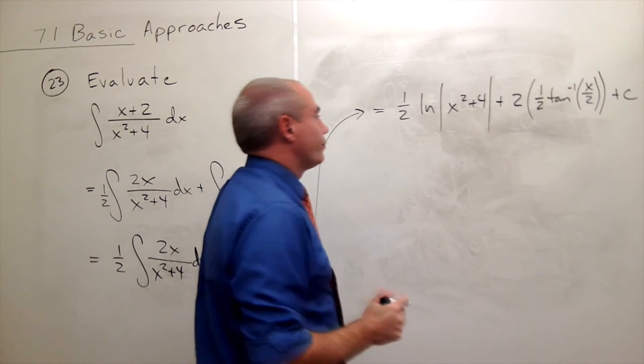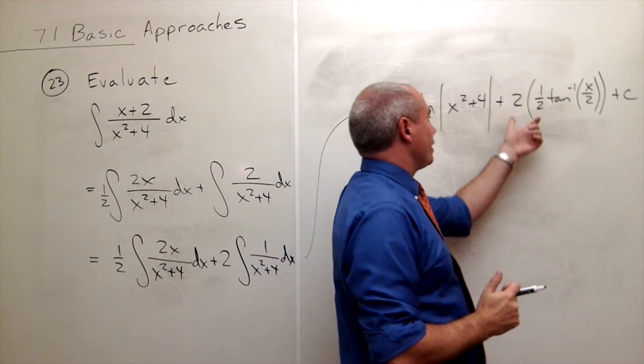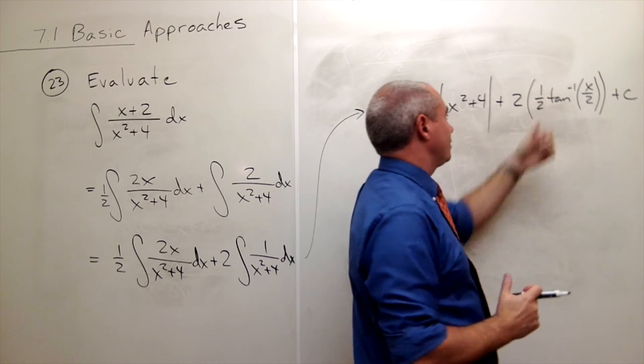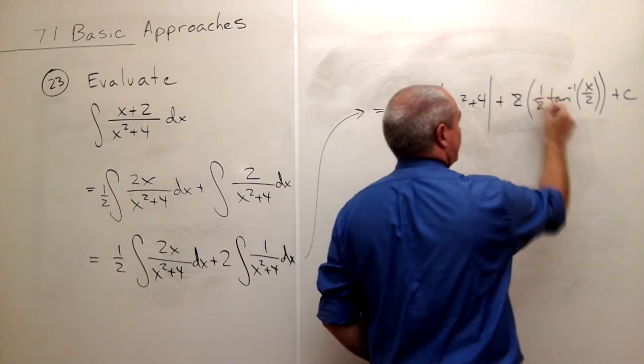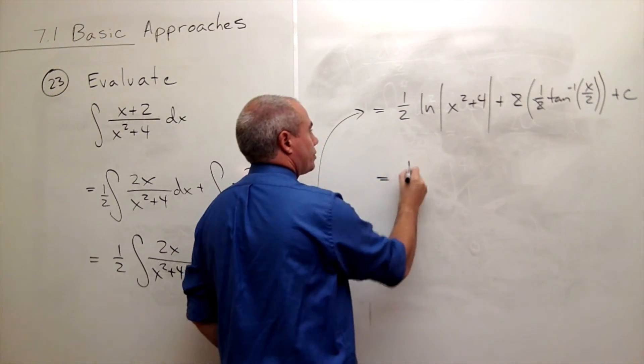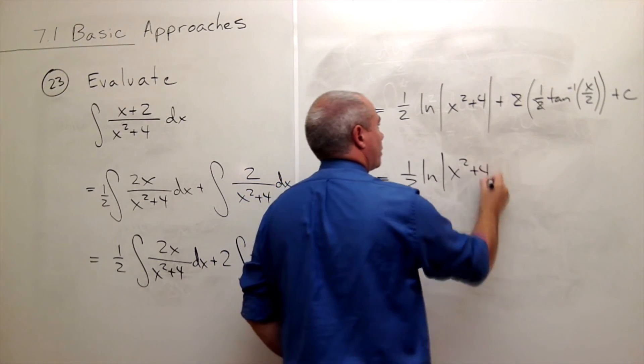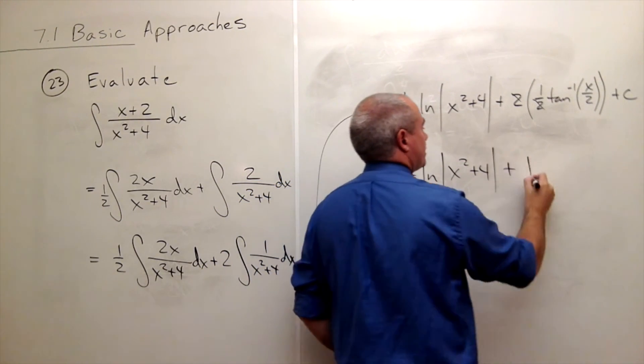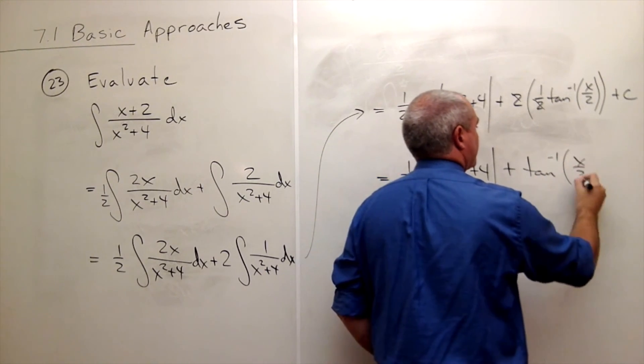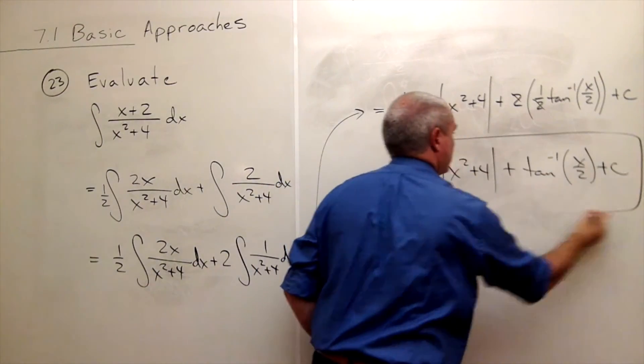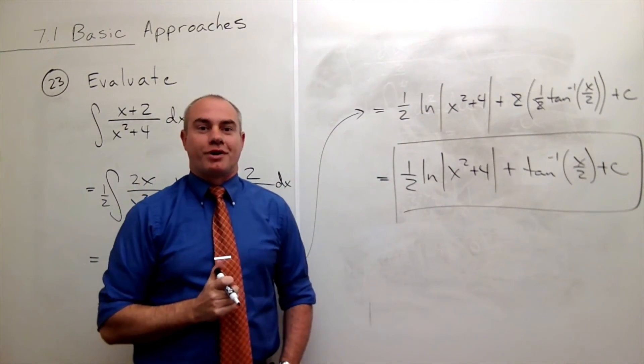And if we really wanted to, we could put that 2 inside, cancel the 1 half, and then just write the answer is 1 half ln of x squared plus 4 plus tan inverse of x over 2 plus c. And we are done.